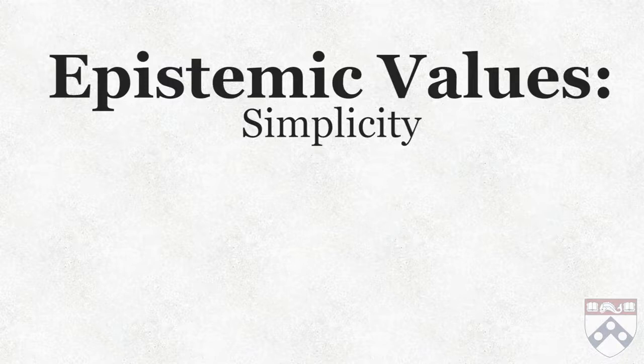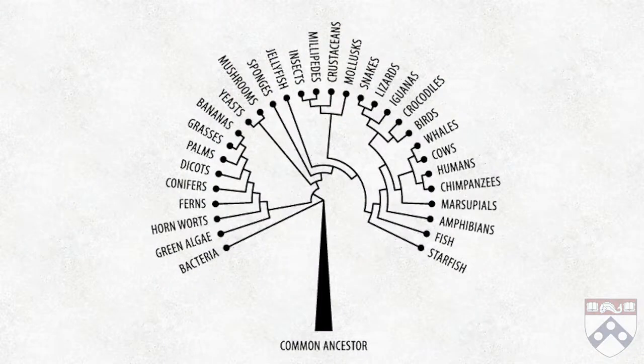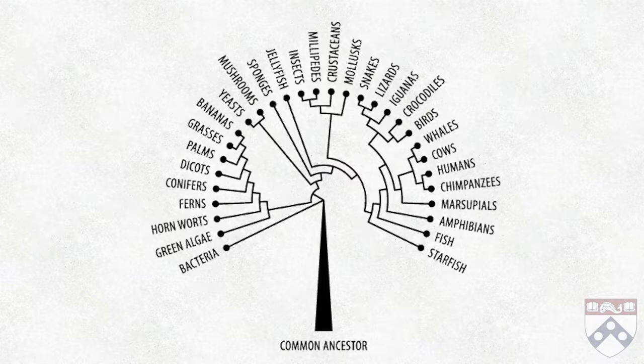Simplicity is another value that many scientists follow in their work. Scientists often want their theories to be simple because they think the simplest explanation is often the right one. Simplicity, or the principle of parsimony in biology, is a good example — it's often applied to evolutionary trees, which explain how a common ancestor evolved into a number of different species. Biologists tend to think that the tree with the fewest branches is probably how speciation actually occurred. The principle of parsimony is based on the assumption that nature aims to be efficient and economical.